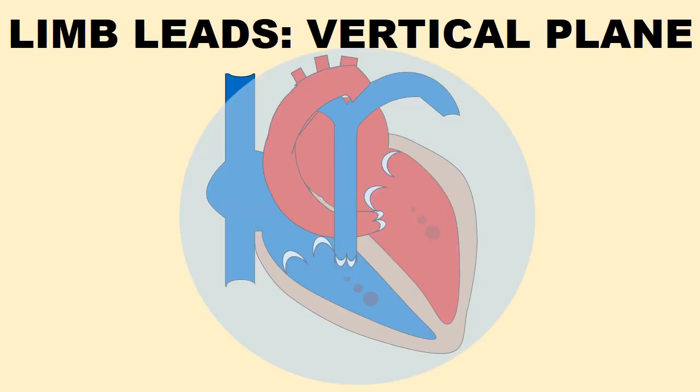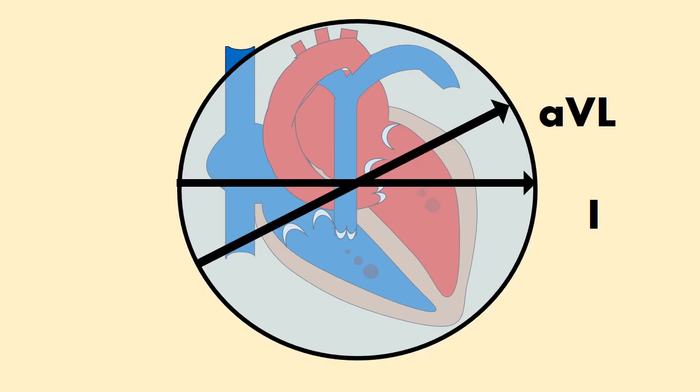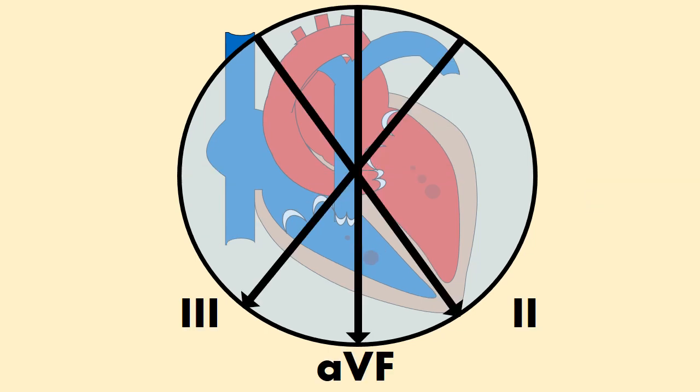Leads 1 and AVL look at the lateral wall of the left ventricle. Leads 2, 3, and AVF look at the inferior wall of the heart.